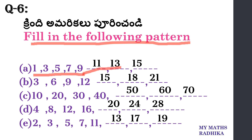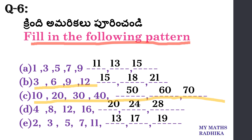3, 6, 9. Next pattern: 3×5=15, 3×6=18, 3×7=21. Next pattern: 10, 20, 30, 40, 50, 60, 70.